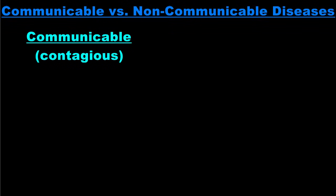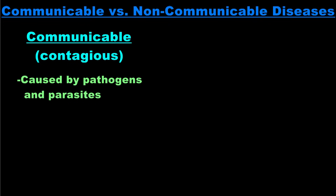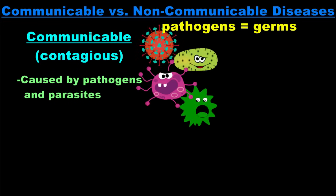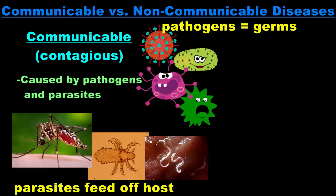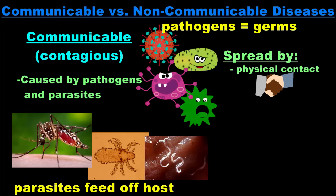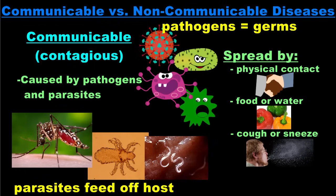Communicable or contagious diseases are caused by pathogens and parasites. Pathogens are germs, while parasites are organisms that obtain nutrition at another organism's expense. Pathogens and parasites can be spread from one person to another through physical contact, contaminated food or water, coughing or sneezing, or even through insect vectors.